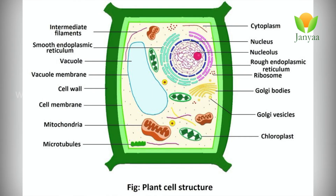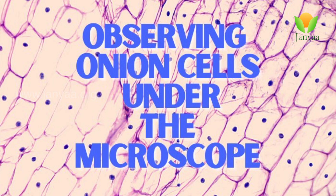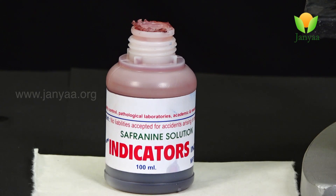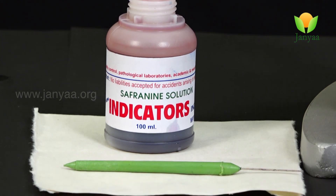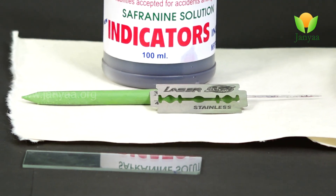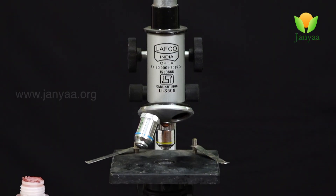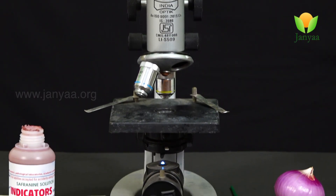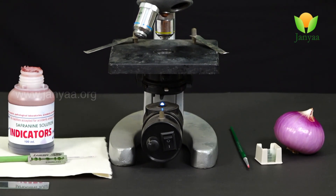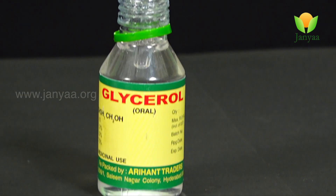Have you observed the cell structure? To observe the cell structure, let us do one experiment — observation of onion peel cells. For that, we need safranin, a needle, a blade, a slide, a microscope, an onion, a cover slip, a brush, and glycerol.